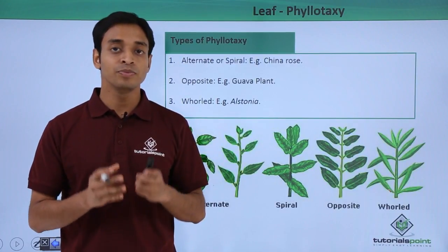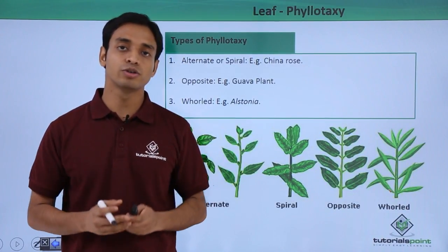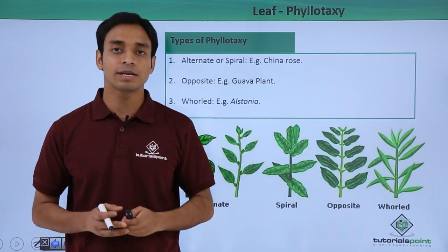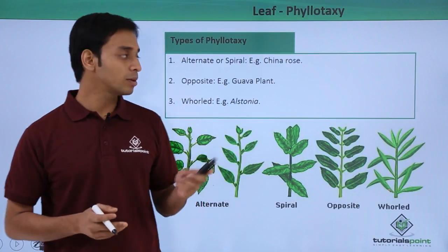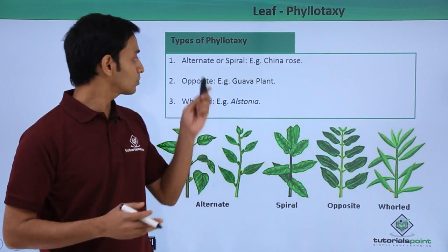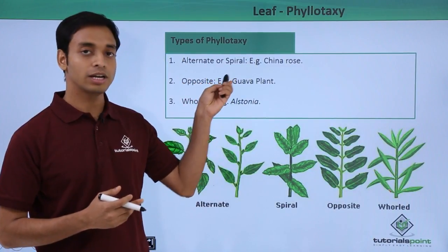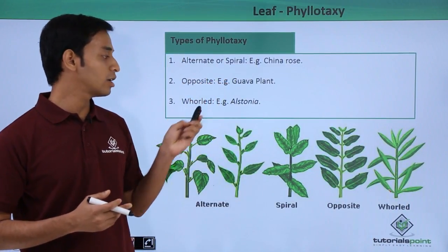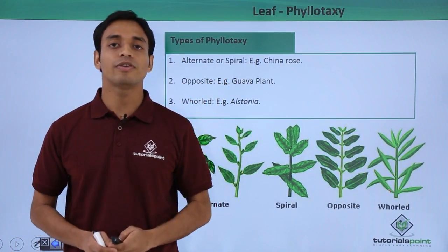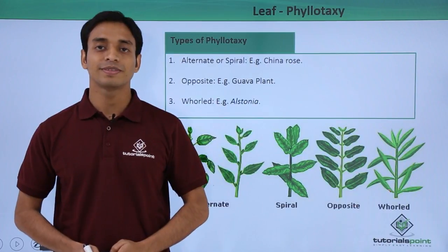In this video we have discussed phyllotaxy, which is the mode of arrangement or distribution of leaves on the branches and the stem. We have also talked about the three different types of phyllotaxy: alternate or spiral, opposite, and whorled phyllotaxy. I hope you have understood and liked this video. Thank you.